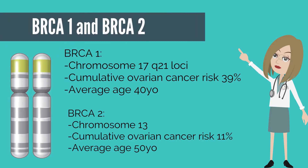BRCA1 gene is located on chromosome 17 at the Q21 loci, while BRCA2 gene is located on chromosome 13. Both genes are important in a large framework of DNA repair molecules. Patients with a BRCA1 mutation have an average cumulative risk for developing ovarian cancer of about 39%, while BRCA2 patients' risk is around 11%. The average age for developing ovarian cancer is also lower than the general population — about 40 years old for BRCA1 and 50 years old for BRCA2.